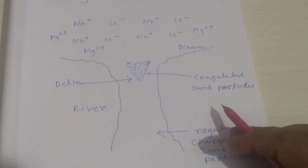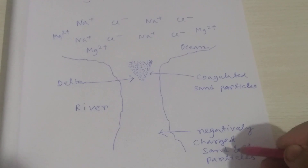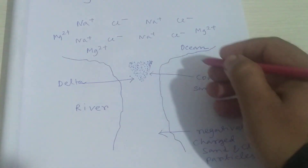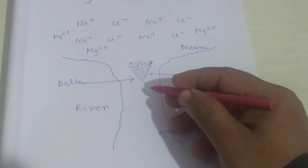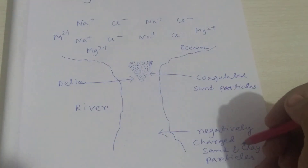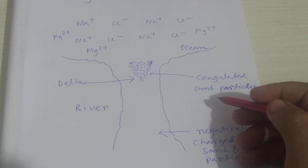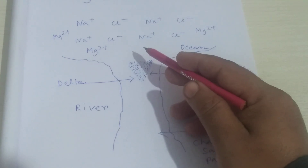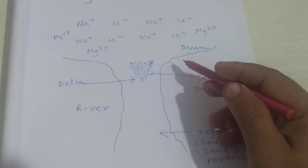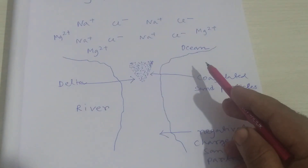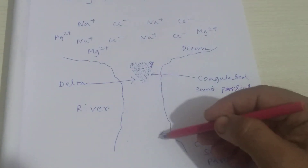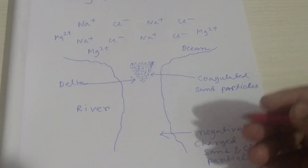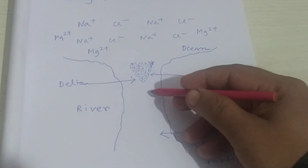When river water, which carries a negatively charged colloidal solution, flows and reaches the meeting point with the ocean, the sand and clay particles present in the river water are coagulated by the positively charged ions present as electrolytes in the ocean — positive charge ions like Mg²⁺ and Na⁺. These ions coagulate the negatively charged sand and clay particles carried by the river.